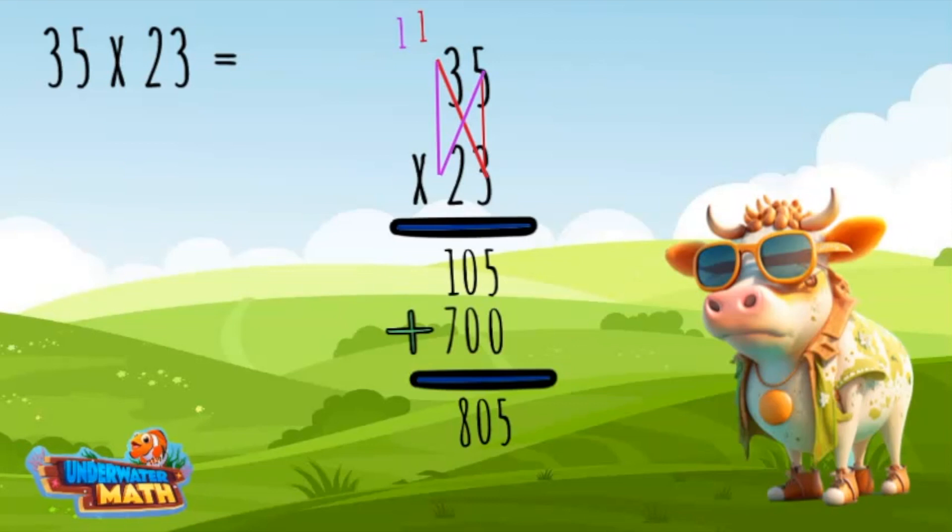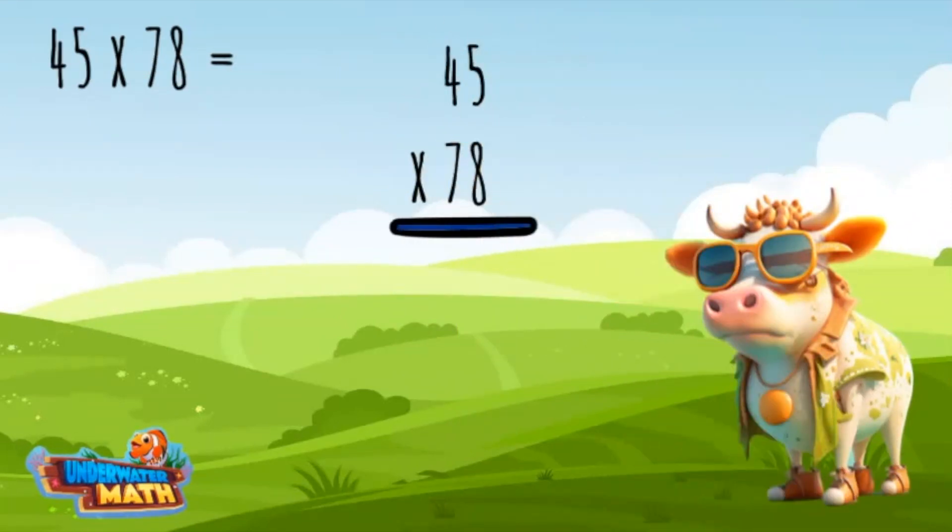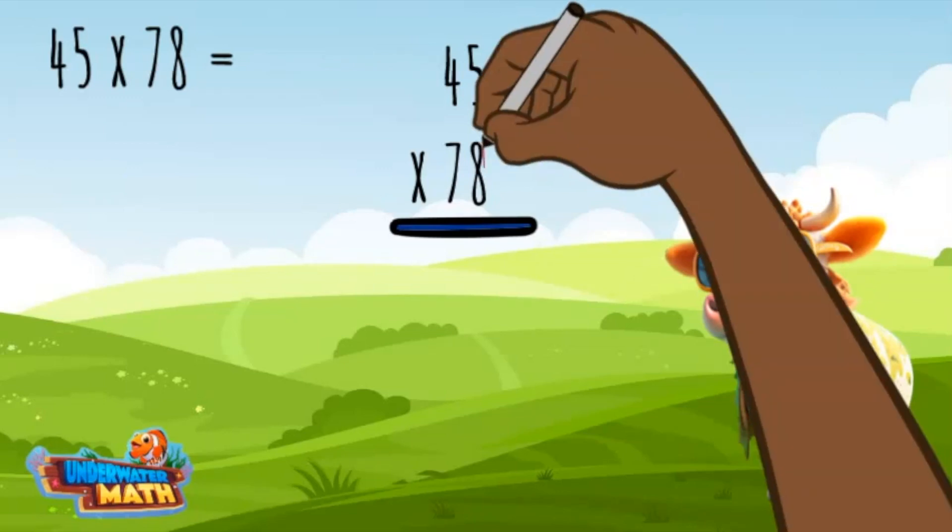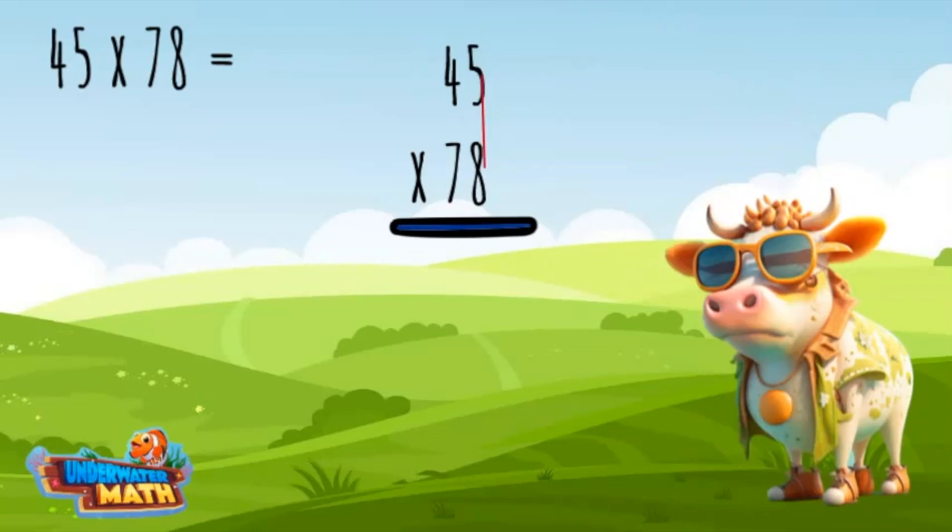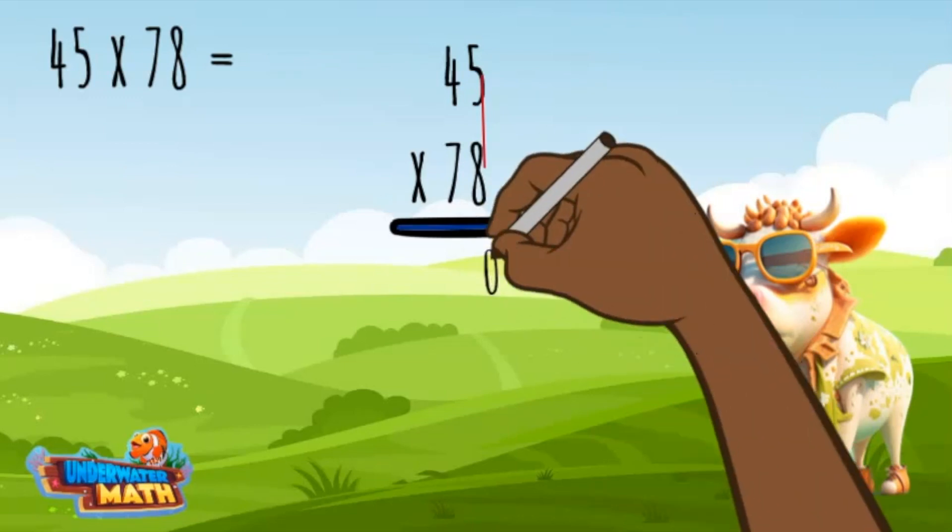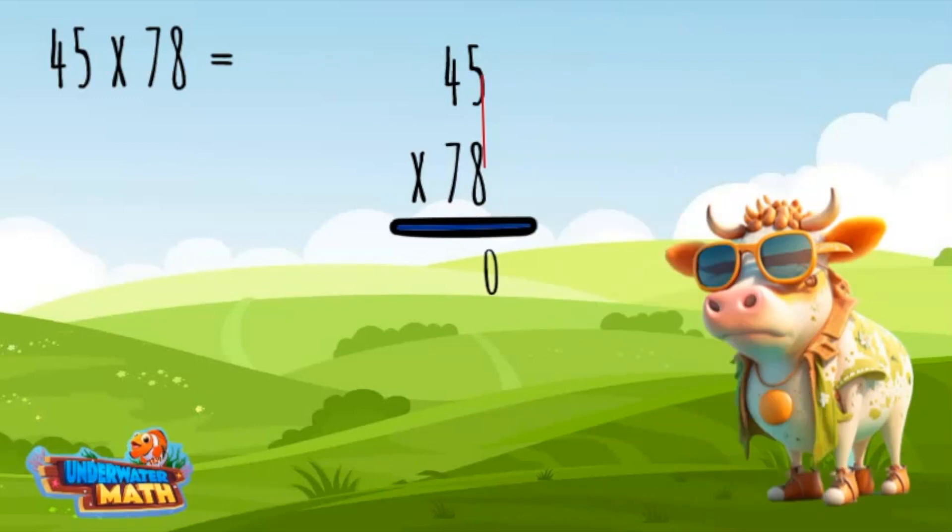We stack the numbers 45 and 78. Start in the ones place and multiply eight times five for an answer of 40. The zero goes below the problem and the four carries over to the tens place.